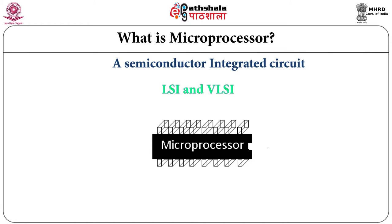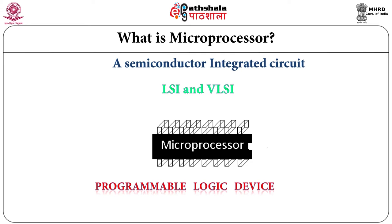A microprocessor is called a programmable logic device. The functioning of a microprocessor depends on both hardware and software. Hardware consists of various functional blocks constructed using logic gates, while software consists of a sequential arrangement of instructions written in low-level language like assembly language or high-level languages, known as a program or code. Because it works according to the software written by the user, it is called a programmable logic device.